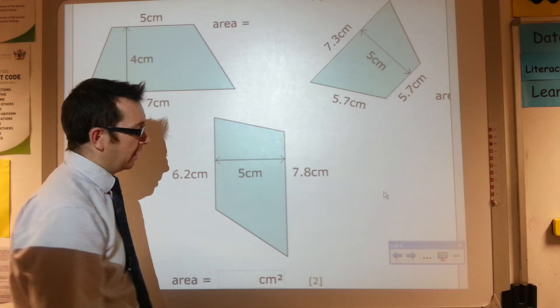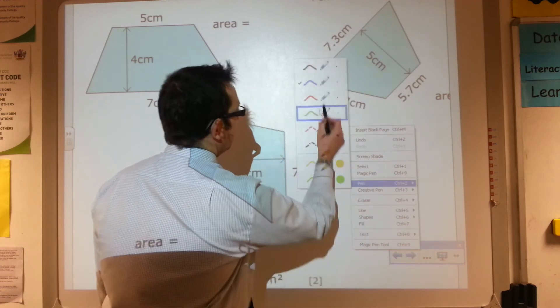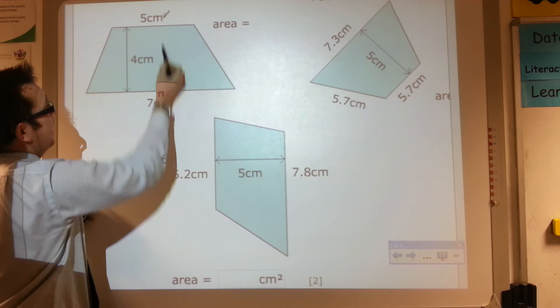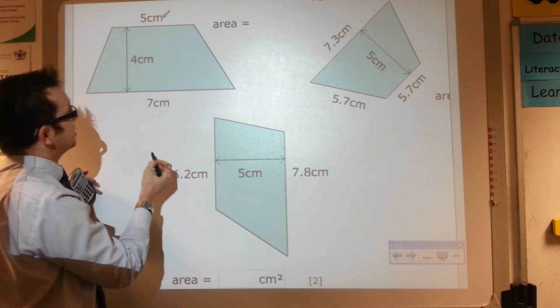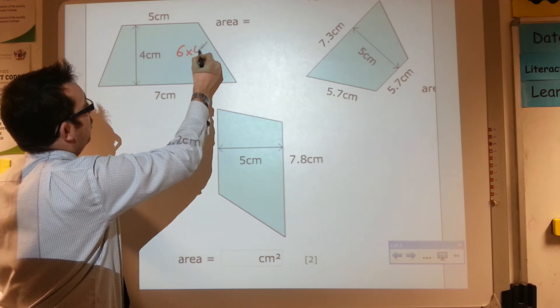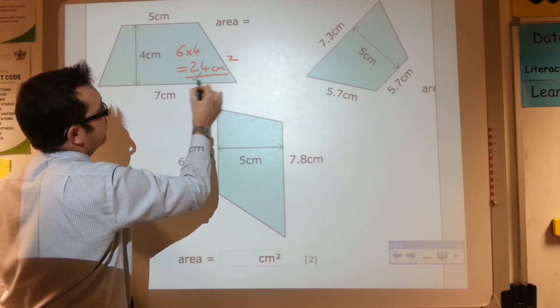Okay, so just to go through some answers now, hopefully you've had a go at all those. The first one should be reasonably straightforward. I think if I find the average of 5 and 7, I think that's going to be 6. So actually here I'm just going to have 6 times 4, and that's 24 centimeters squared. That should be the answer for the first one.